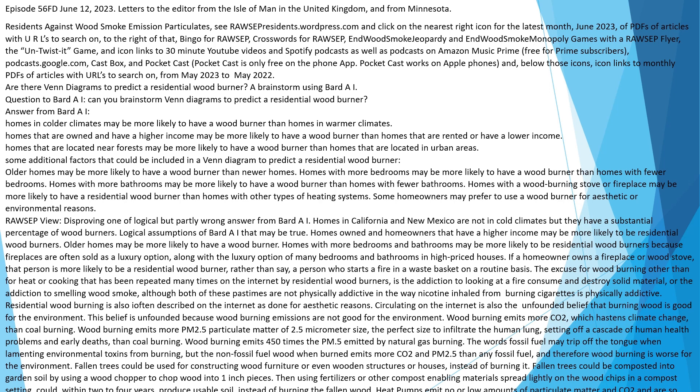Wood burning emits more PM2.5 particulate matter — particles of 2.5 micrometer size, the perfect size to infiltrate the human lung — setting off a cascade of human health problems and early deaths, more than coal burning. Wood burning emits 450 times the PM2.5 emitted by natural gas burning. The words 'fossil fuel' may trip off the tongue when lamenting environmental toxins from burning, but the non-fossil fuel wood, when burned, emits more CO2 and PM2.5 than any fossil fuel, and therefore wood burning is worse for the environment.